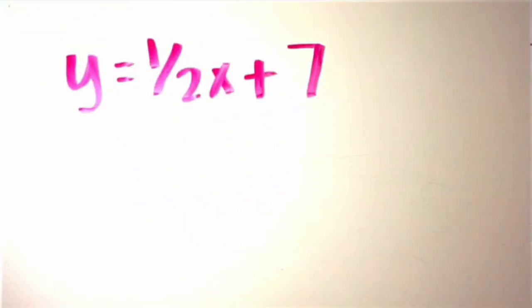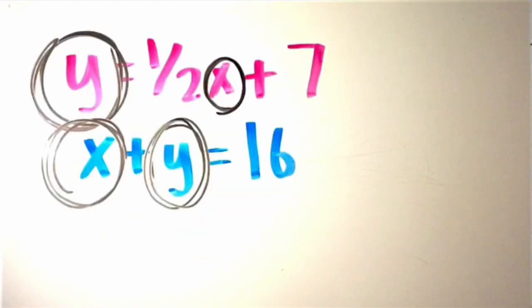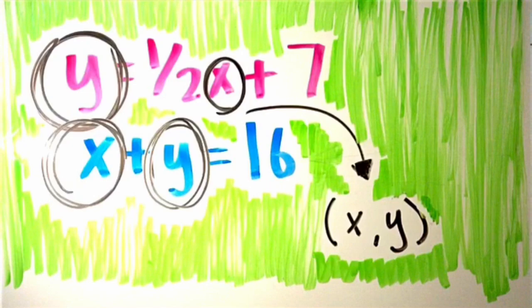Y equals 1 half X plus 7, and X plus Y equals 16. In this problem, our variables represent the coordinates on each axis of a graph.